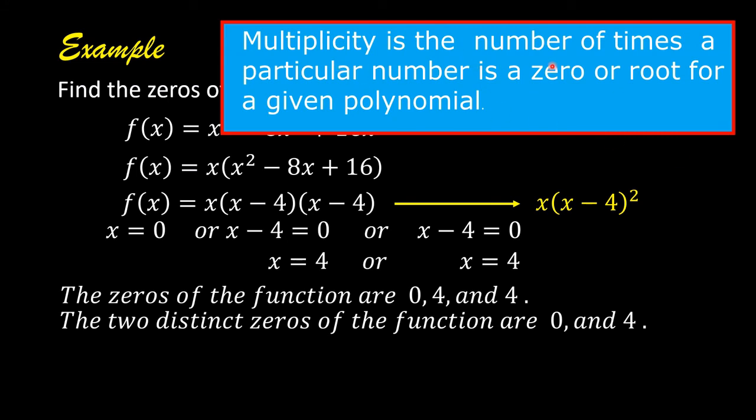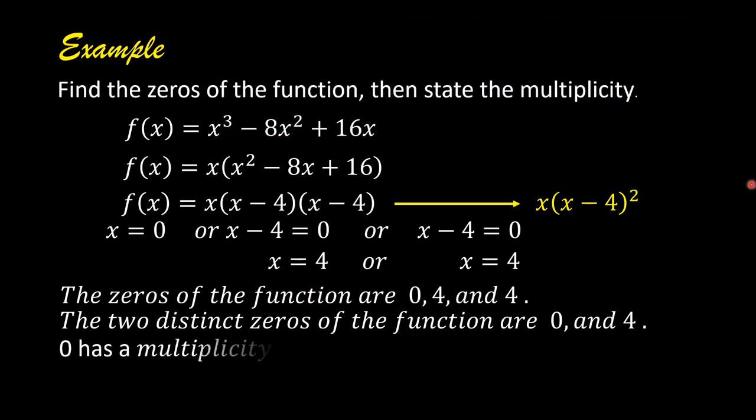Multiplicity is the number of times a particular number is a zero or root for a given polynomial. 0 is a root only once and 4 is a root twice. So therefore, 0 has a multiplicity of 1 and 4 has a multiplicity of 2.